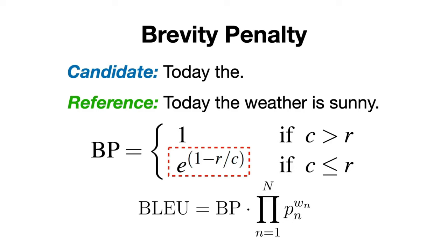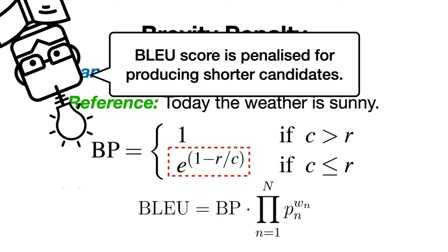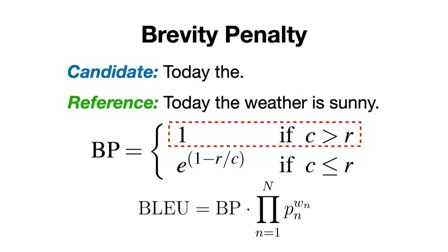Because it is a number between 0 and 1, it ensures that shorter sentences are not unfairly rewarded simply because they have fewer opportunities for mistakes. And, on the other case, if the length of the candidate sequence is greater than the length of the reference sequence, we don't apply any penalty.